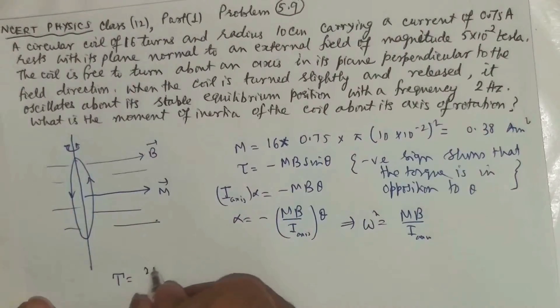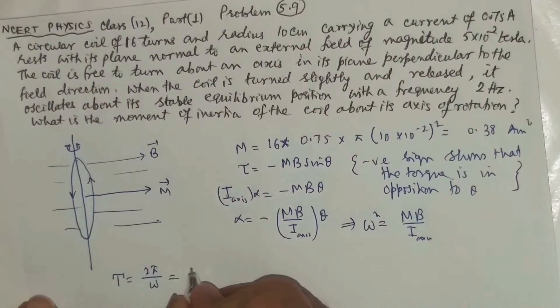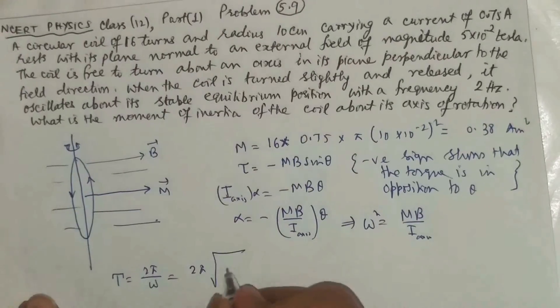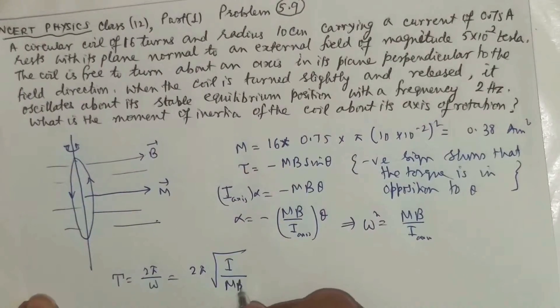We know that time period is equal to 2 pi by omega. So therefore time period is 2 pi root over I divided by mb.